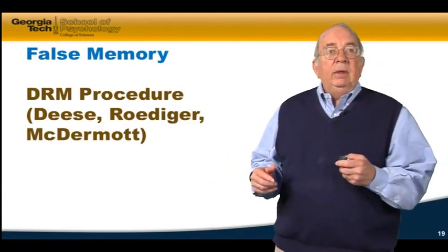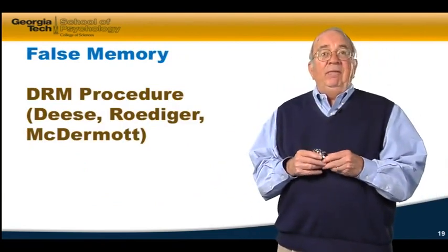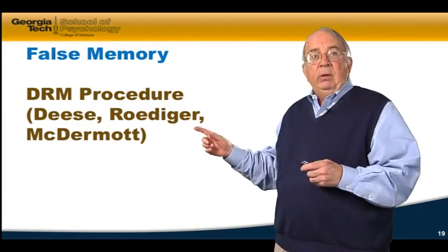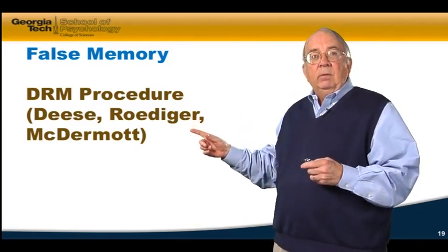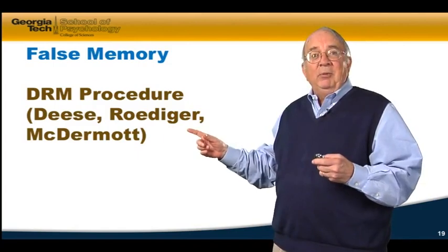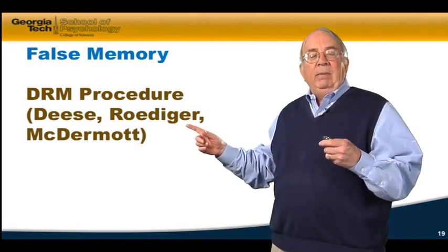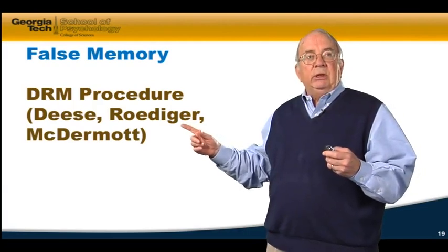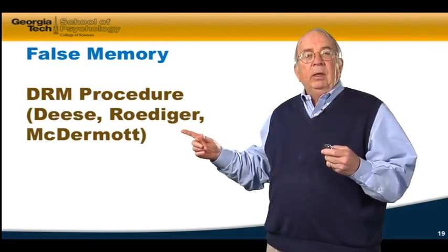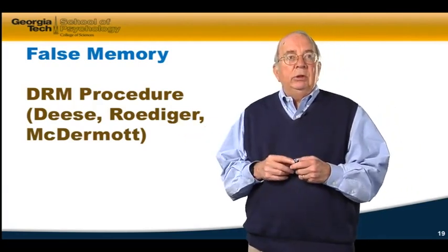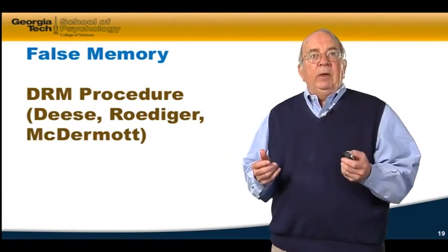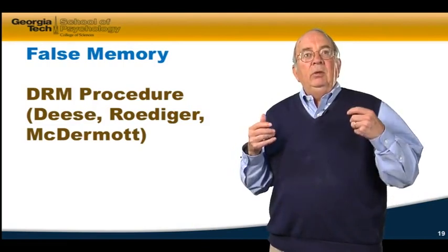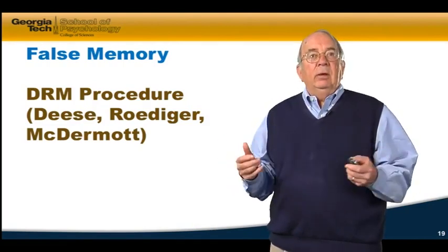This was studied by James Deese in the late 1950s, but had little impact at first. Roediger and McDermott later revitalized the phenomenon, and it became the DRM procedure — Deese, Roediger, and McDermott — an important tool for understanding memory illusions and false memories, and how powerful they can be: you think you saw something, you think you remember something, when it didn't actually occur.